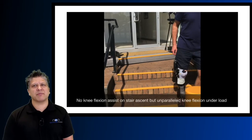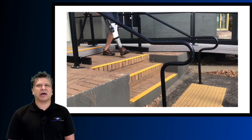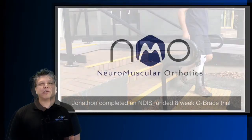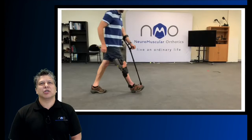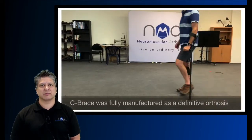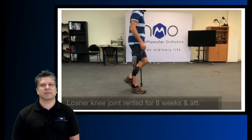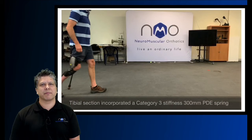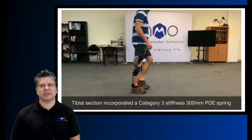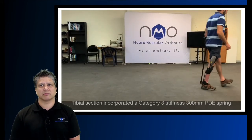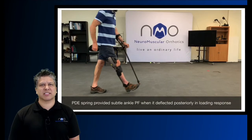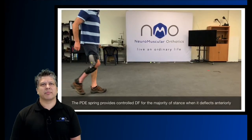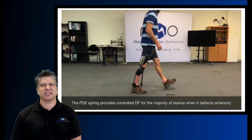There is no knee flexion assistance on stair ascent, but the C-Brace provides unparalleled knee flexion under load. After half an hour of walking, Jonathan has already learned to use the knee flexion under load. Following the successful C-Brace walking cast trial, Jonathan was funded for an eight-week trial of the C-Brace. It was fully manufactured as a definitive orthosis with a low knee joint rented from Ottobock for eight weeks. The client trained with his neurophysio twice a week and the tibial section incorporated a category three 300mm PDE spring, which provided subtle ankle plantar flexion when deflecting posteriorly in loading response.